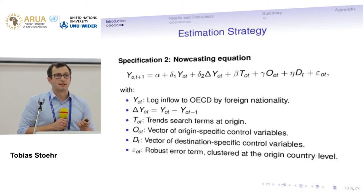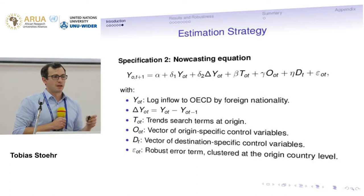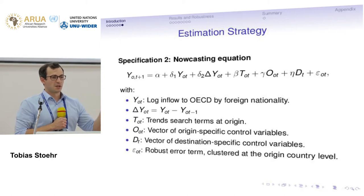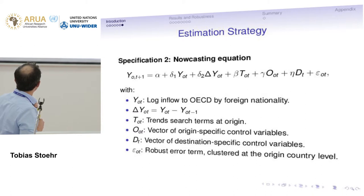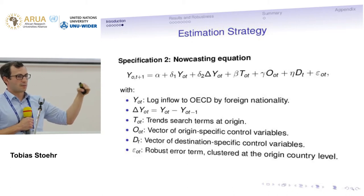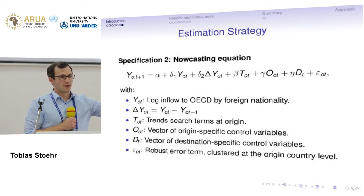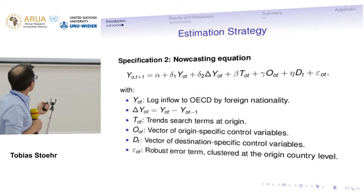Our second specification is closer to what forecasters use. It puts us against the benchmark of simply expecting last year's inflow of migrants for this year, which is quite a good forecast. We control for last year's inflow as well as the percentage increase in inflow over the past two years. For example, if migration has been growing by 5% per year, we expect it to grow another 5% as a baseline, to make sure it's not just picked up by our Google Trends variables.